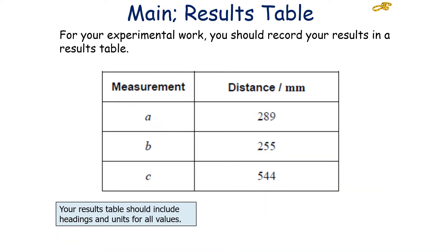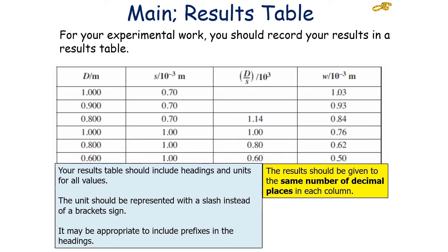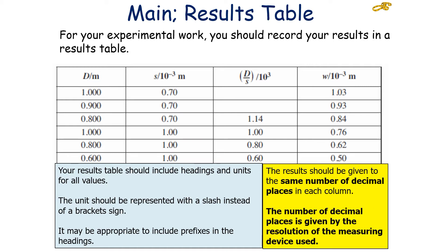For your experimental results you should record your results in a results table. Your results table should include headings and units for all values. Units should be represented with a slash rather than a bracket, and it may be appropriate to place a prefix in your heading. Results should be given to the same number of decimal places in each column, determined by the resolution of the measuring device used to collect that data.